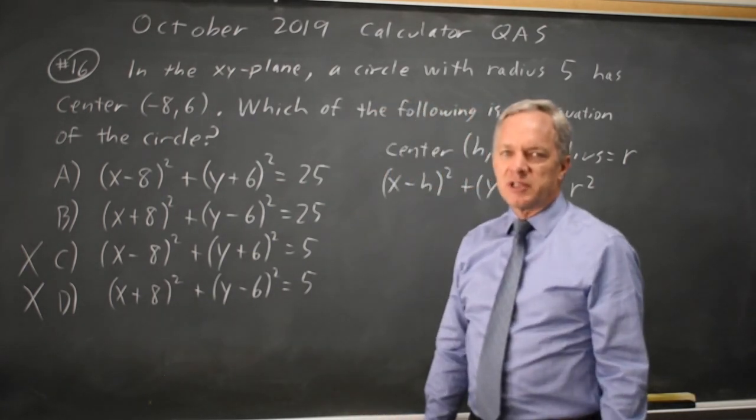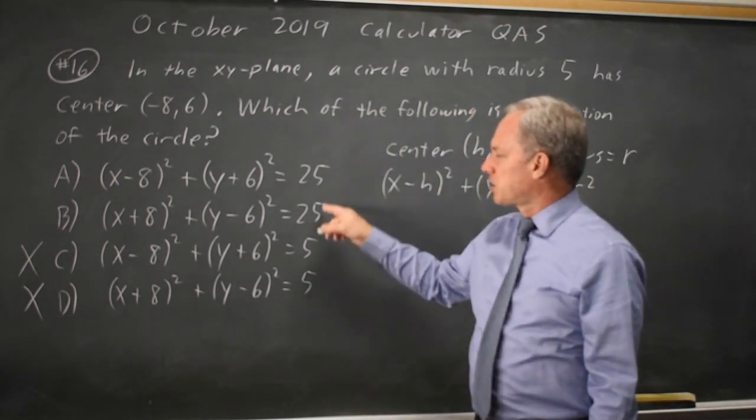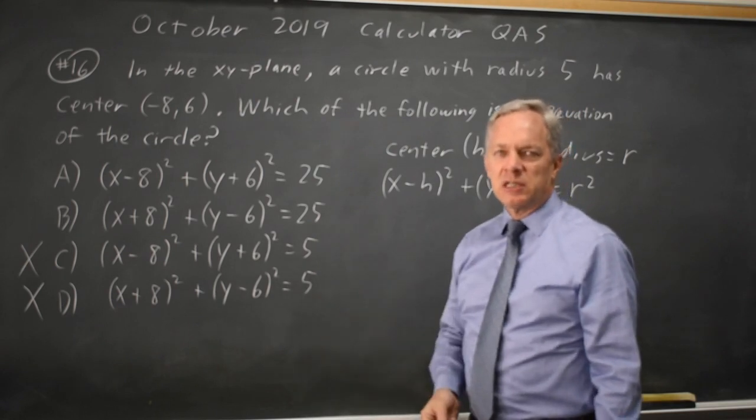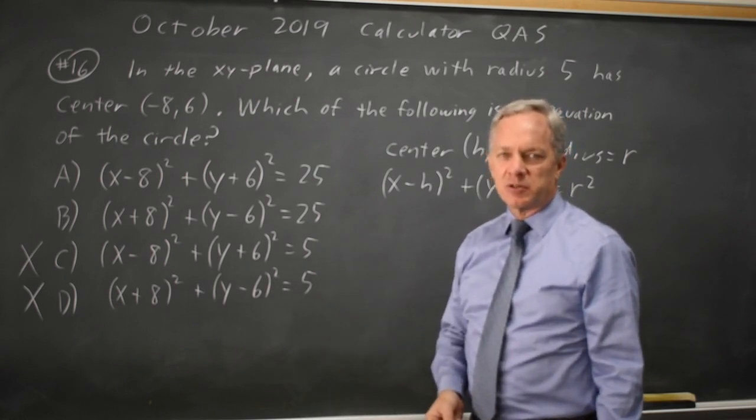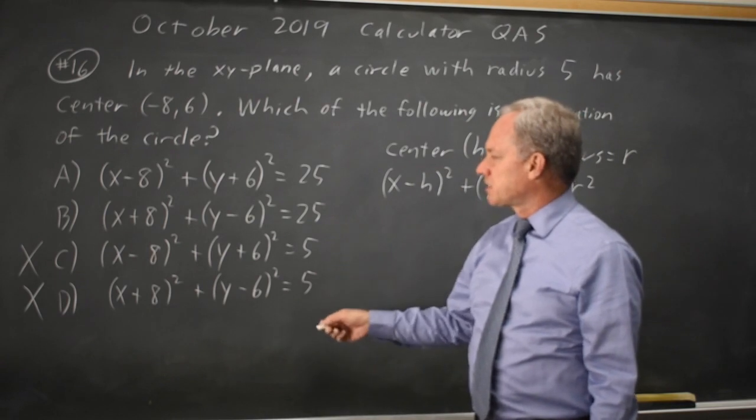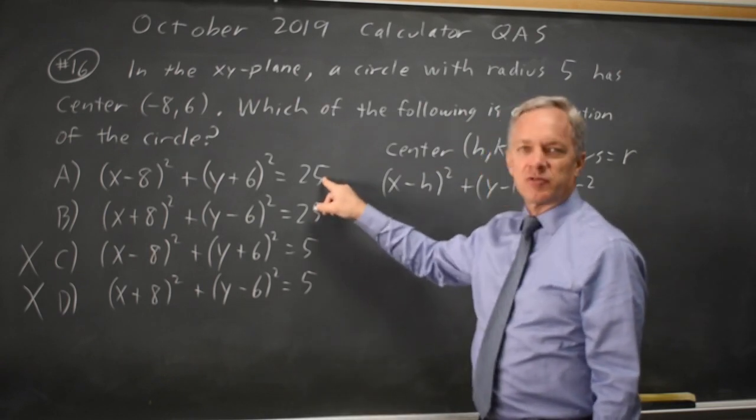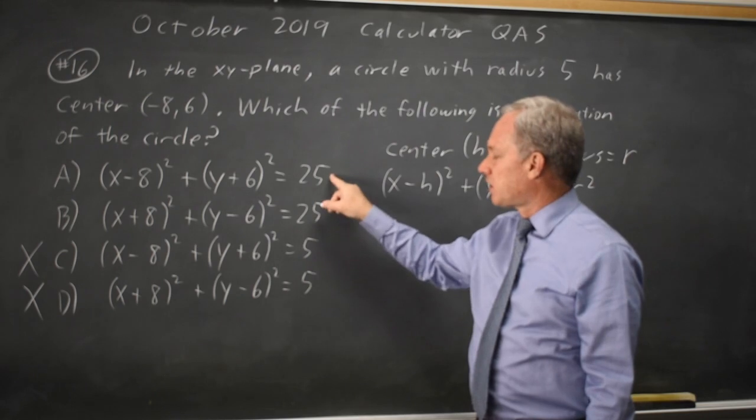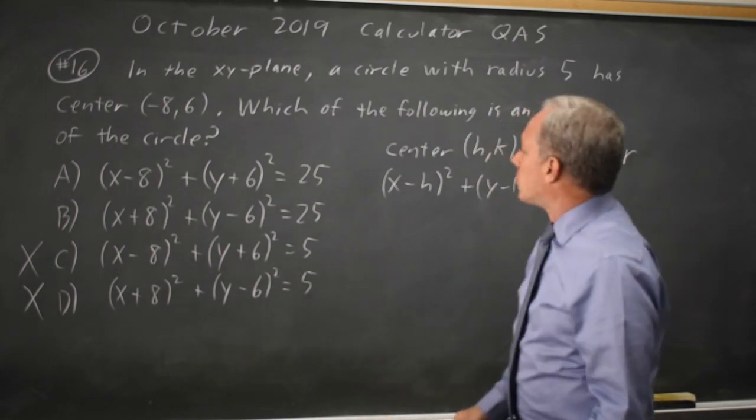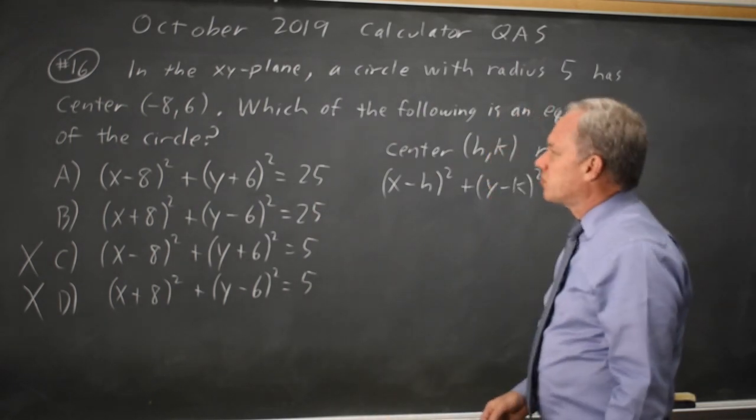College Board will often test specifically: do you remember that this is r² on the right and not just r? They can ask that question in either direction. They'll give you the equation and ask, is the radius 25 or 5? Or they'll give you the radius and ask you for the equation.